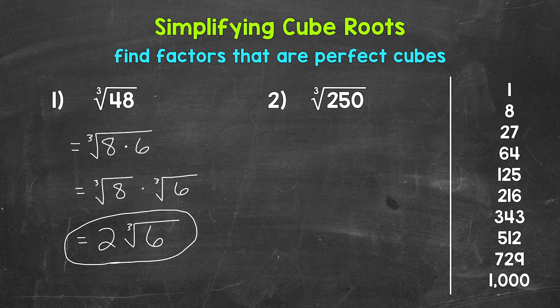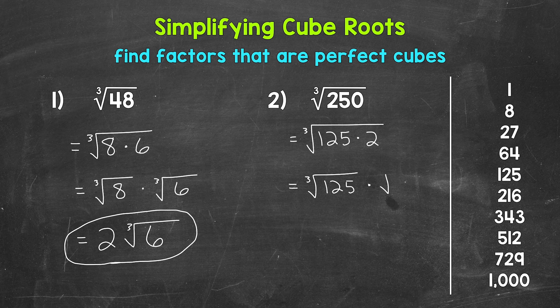Since there's a factor of 250 that's a perfect cube, we can simplify. We can rewrite this as the cube root of 125 times 2. Now let's split this into the cube root of 125 times the cube root of 2.